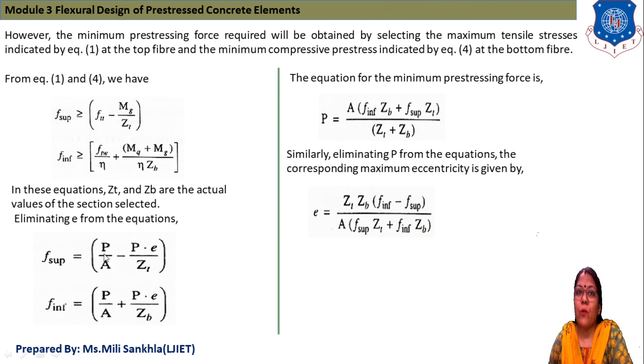F_sup = P/A - P×e/ZT. Top stress. F_inf, bottom stress, is P/A + P×e/ZB. Next we find the equation for minimum pre-stressing force: P = A × (F_inf×ZB + F_sup×ZT) / (ZT + ZB). We find eccentricity e also. Eccentricity e = (ZT × ZB × (F_inf - F_sup)) / (A × (F_inf×ZB + F_sup×ZT)).